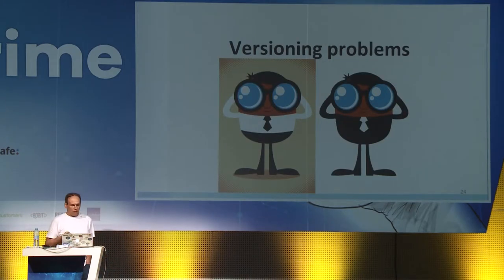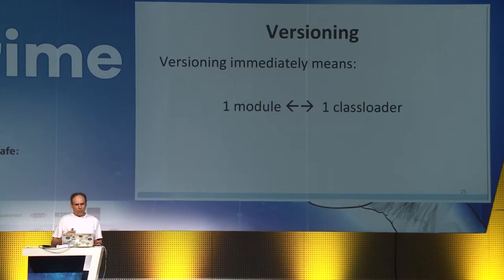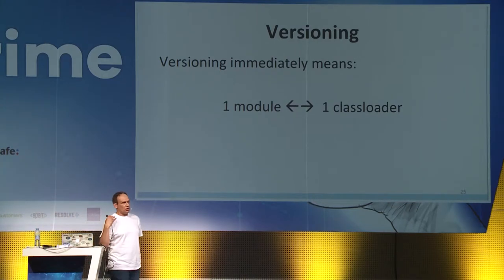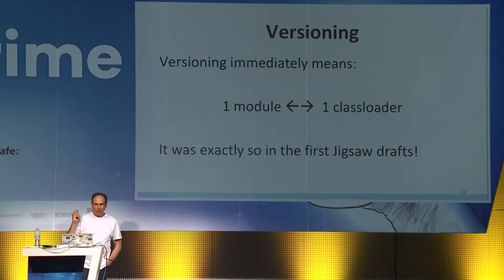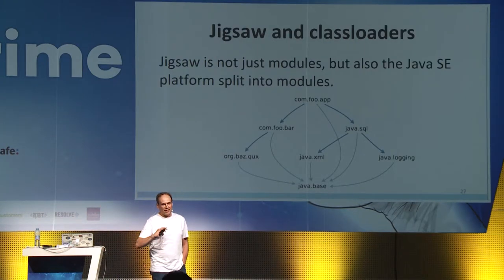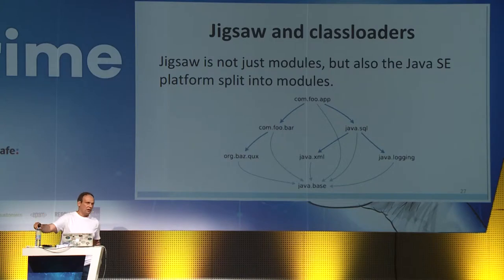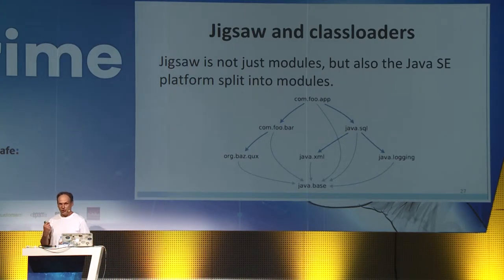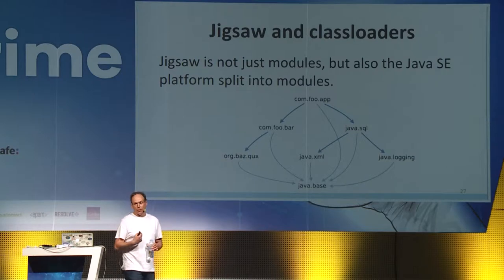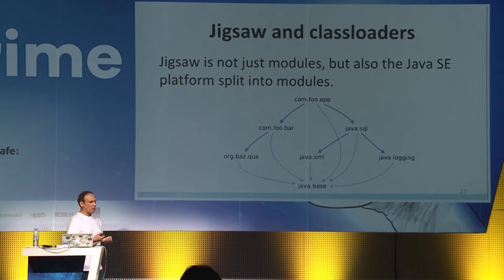So we have a clear problem and a clear solution — why not just implement it? When trying to solve the versioning problem, we inevitably come to the concept that each module should be loaded by its own class loader, and it was exactly so in the first Jigsaw drafts. But Jigsaw is not just modules — it's also the Java SE platform split into modules. Jigsaw was developed for 10 years, not without reason. One main reason was that it was really hard to split the monolith called rt.jar into well-defined modules with well-defined dependencies without cycles. Developers faced serious problems regarding versioning and the Java platform split.